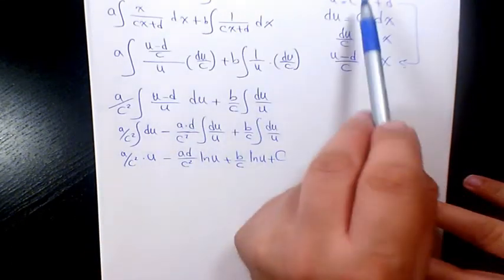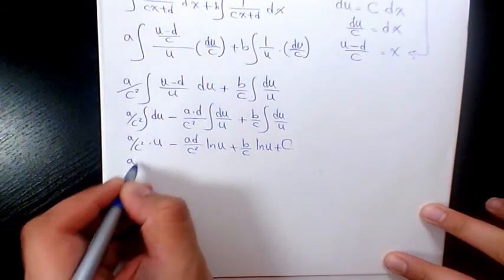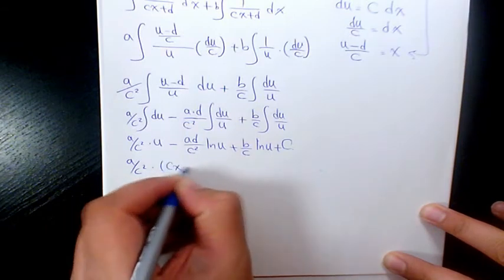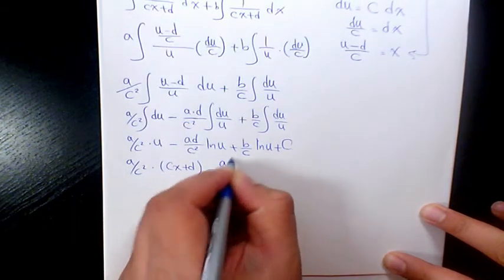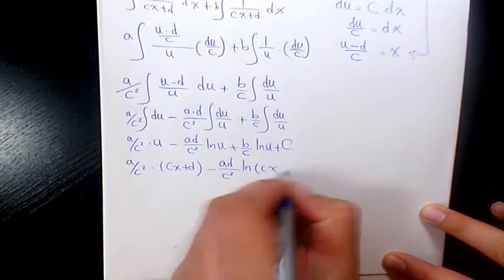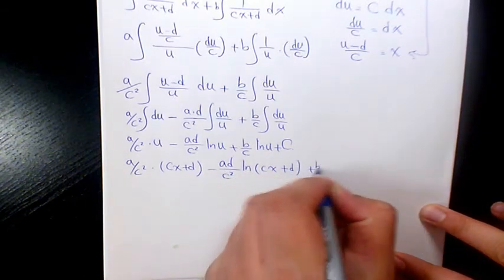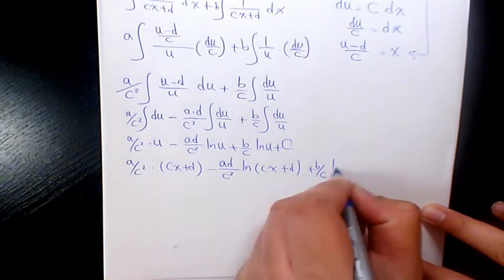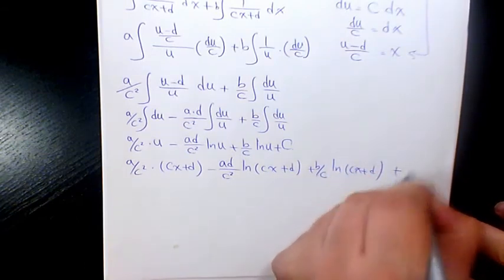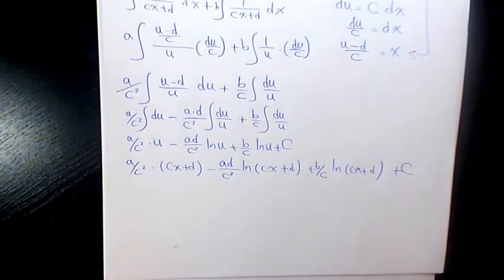So this is the final step. U is cx plus d, so we have a over c squared times cx plus d, minus ad over c squared ln cx plus d, plus b over c ln cx plus d, plus a constant number.